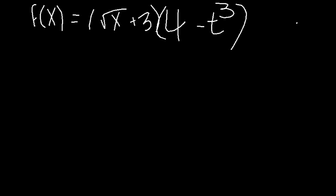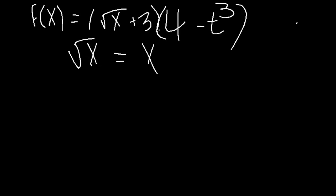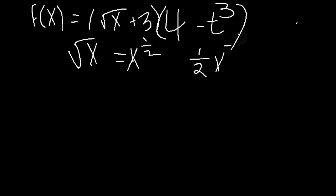Now try to solve this problem on your own. We do have two functions multiplying each other, so we know we are going to be using the product rule. We need to find the derivative of the square root of x. We can rewrite root x as x to the power of one half. Now that we have the root converted into an exponent, we can use the power rule — bring down the exponent to the front and subtract the exponent by 1, which gives us negative one half.